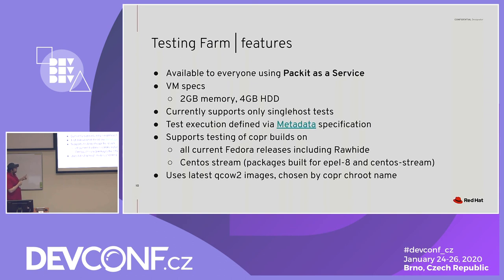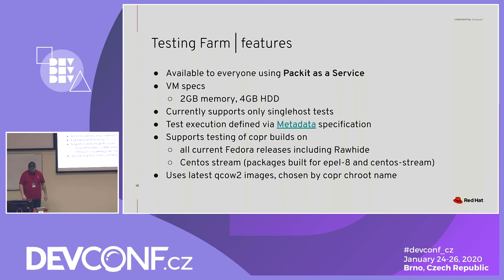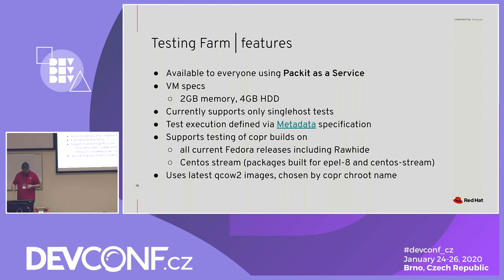Currently we test like Packit builds copr builds, which we then install on Fedora releases. For each copr build, we find the latest nightly build of that operating system, boot it, install the copr build, and then run the tests on it. Recently we added CentOS Stream support. We just realized new QCOWs are already being generated by the CentOS team, so we will be updating that so it always looks up the latest CentOS Stream image, boots it, and runs the tests.